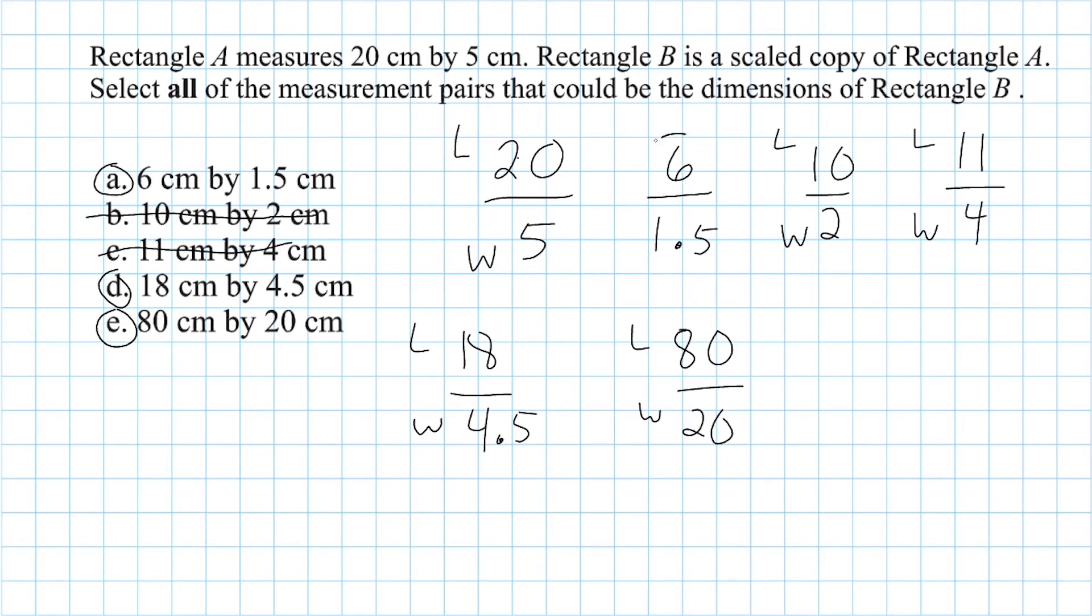So we would say that option A right here is a scale copy of rectangle A. We would say that this option right here, option D, is a scale copy, and option E is a scale copy.